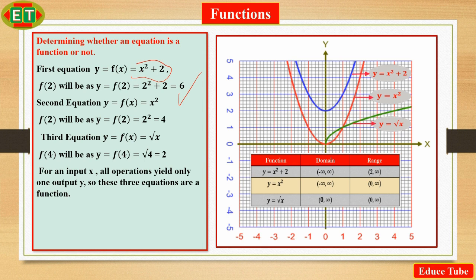For second equation, if x = 2, then y = 4. Third equation, if x = 4, then y = 2. So we can conclude that for an input x, all operations yield only one output y. So these equations are a function. Graph of three equations are shown at right-hand side. Table of functions, domains, and associate range of these three equations are kept at the bottom of graph to compare with corresponding graphs.